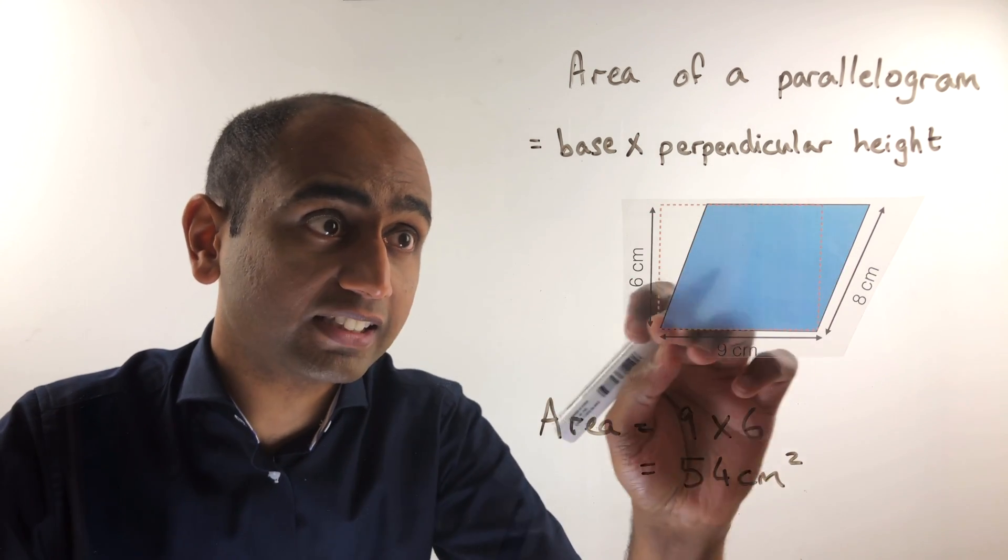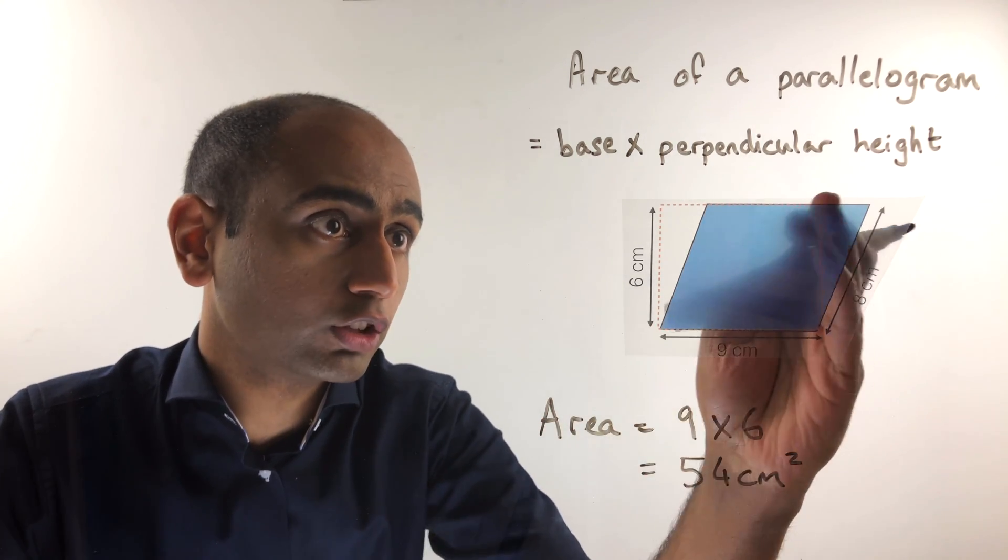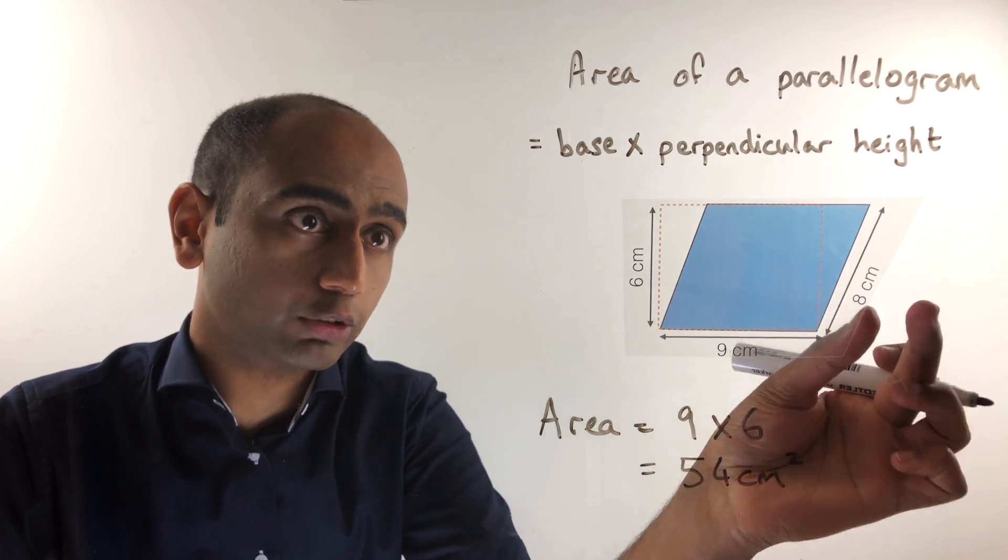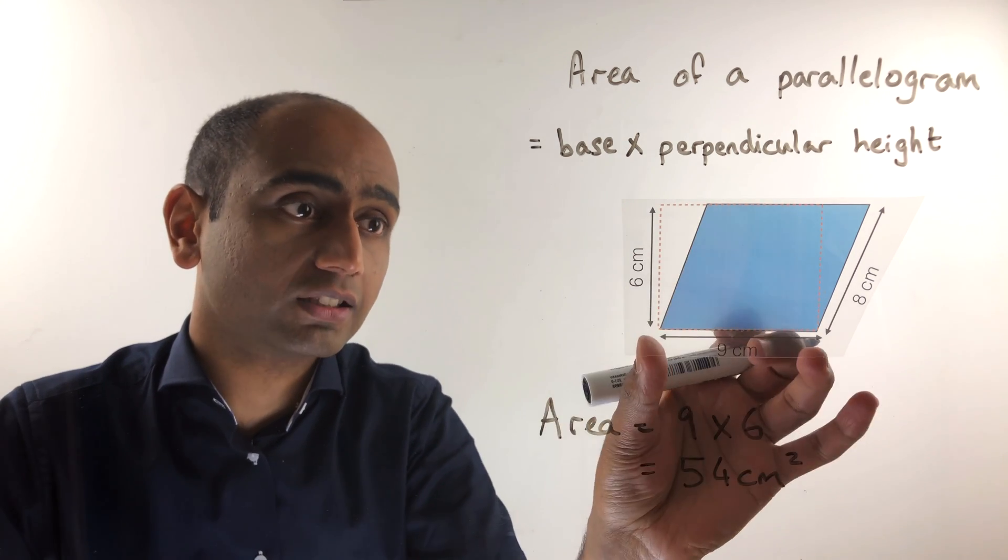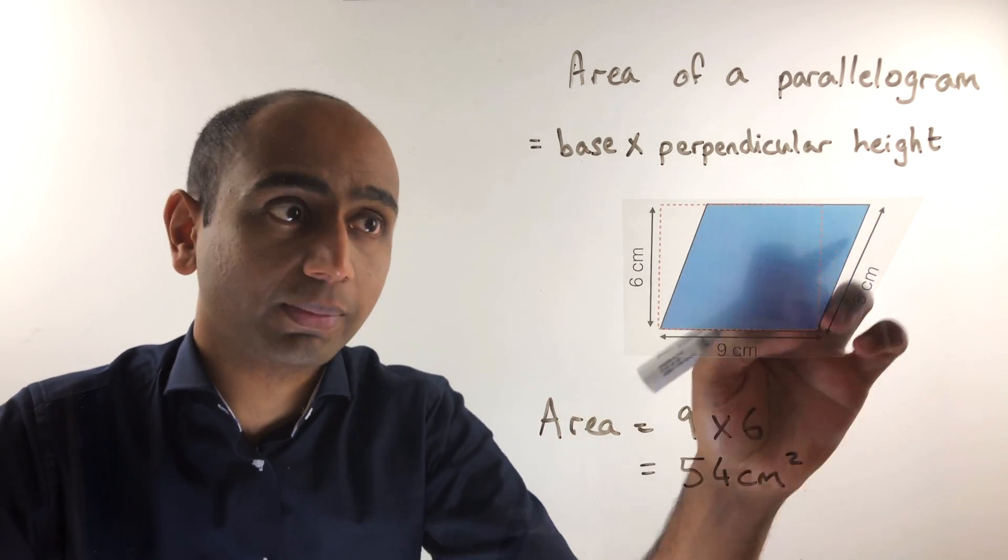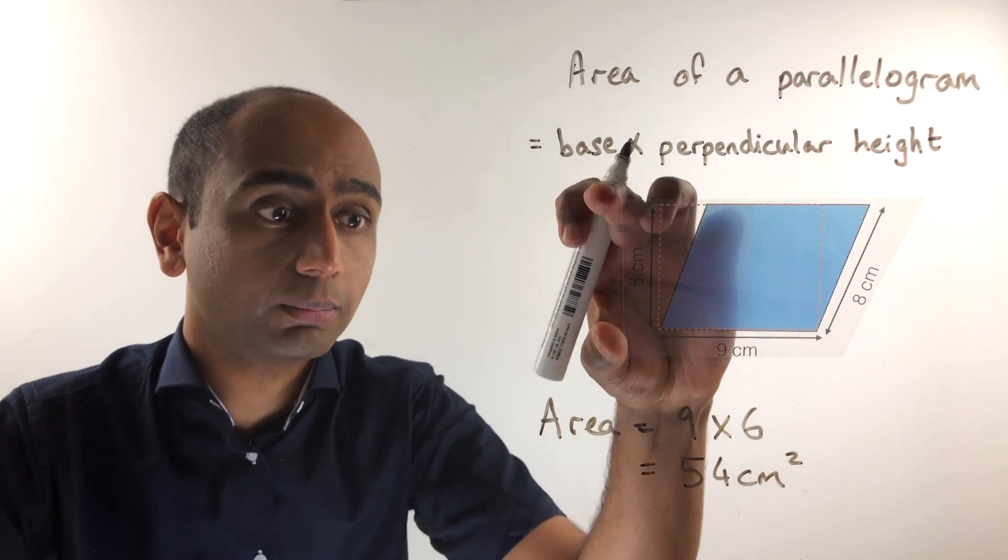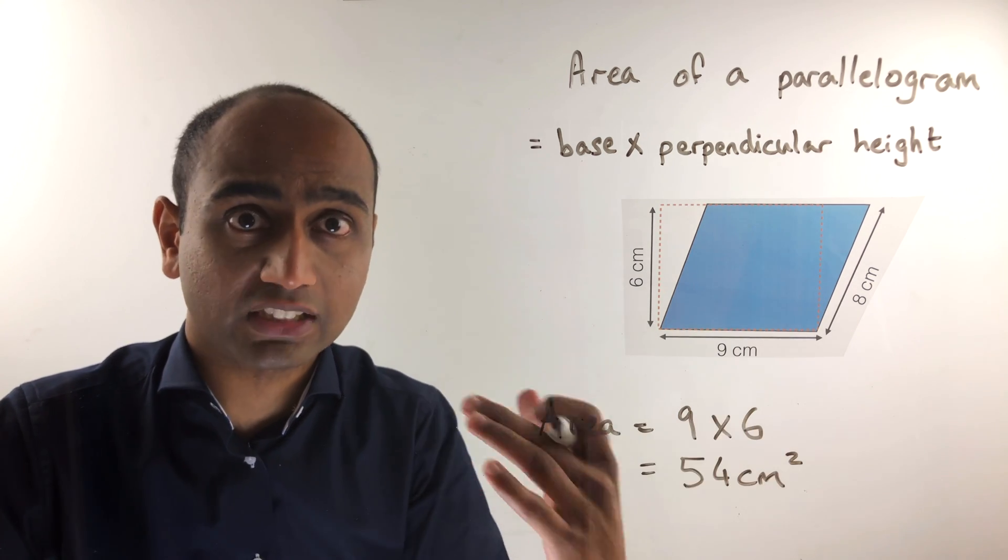I've also drawn in dotted lines here the size of the rectangle you would get if you were to cut off the triangle off the right hand side of this parallelogram and position it in here. So it should be really clear that the rectangle has the same area as this parallelogram, and that would be a 9 by 6 rectangle. So the area really is 54 centimetres squared.